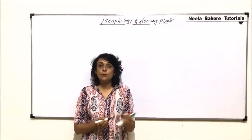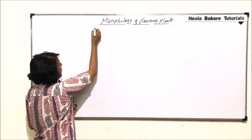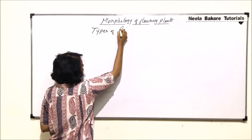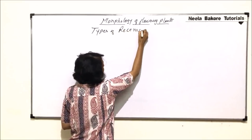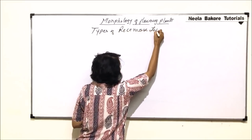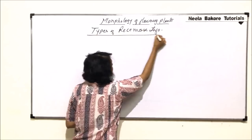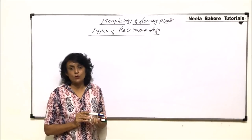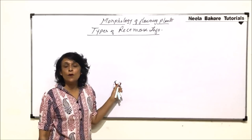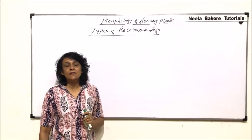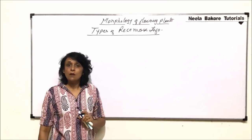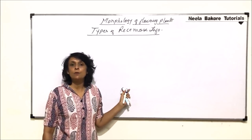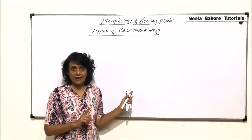We will now take up the types of racemose inflorescence. We have already understood the basic difference between racemose and cymose. In racemose inflorescence, the main axis continuously grows, never terminates into a flower, has acropetal arrangement of flowers, and is a monopodial axis.